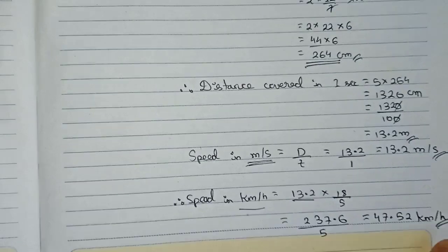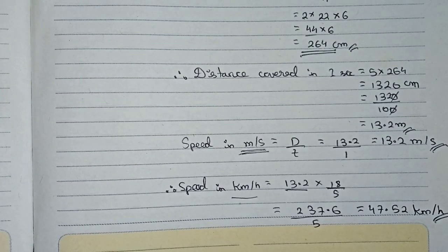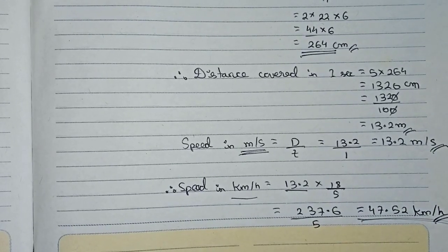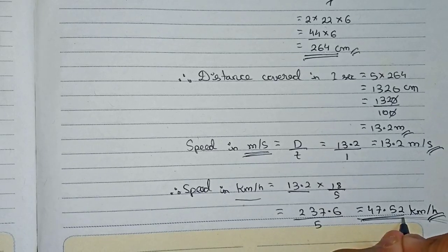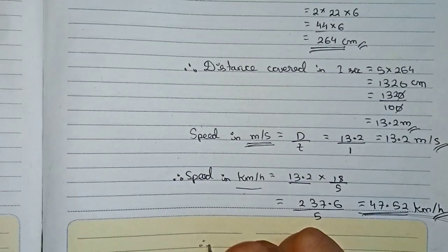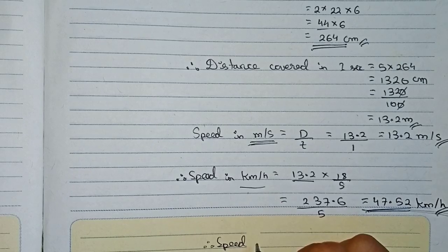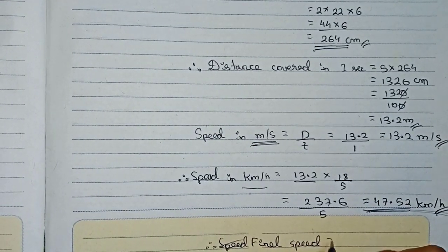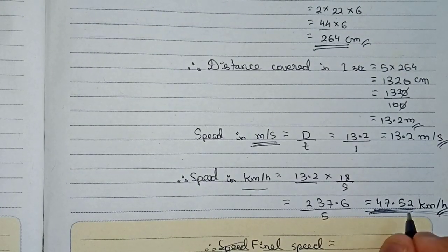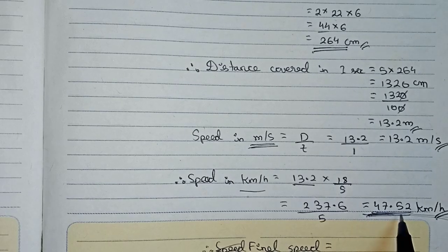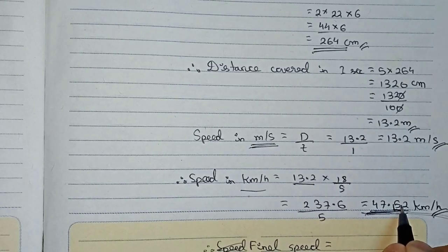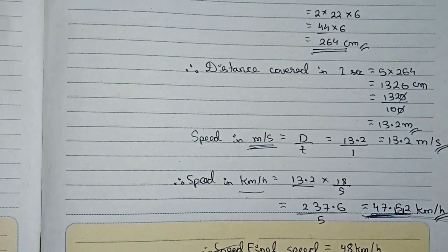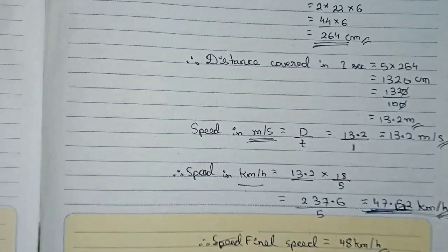This is our speed in kilometers per hour. The question further mentions that we have to give the speed to the nearest kilometer. Since 47.52 rounds up — the digit after the decimal is 5, which is greater than or equal to 5 — the final speed is 48 kilometers per hour. This is the final answer.